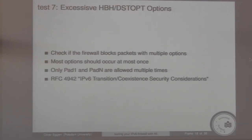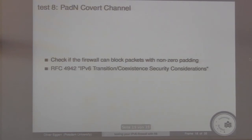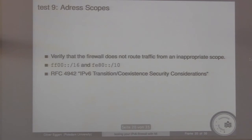Test seven is excessive hop-by-hop and destination options. You can have multiple options within those headers, but each option should occur at most once — only padding options are allowed multiple times. You can also use a padding field as a covert channel if you don't set it to zero, and we check if the firewall detects that. The last test is the address scopes test, checking whether the firewall routes traffic from an inappropriate scope — multicast and link-local addresses should not be forwarded from your local net to the internet.